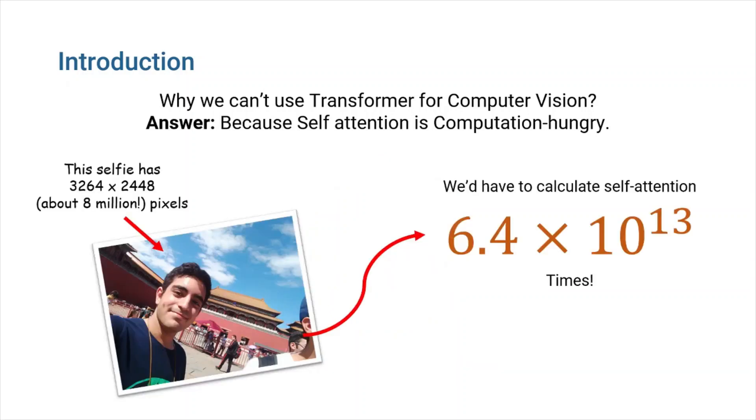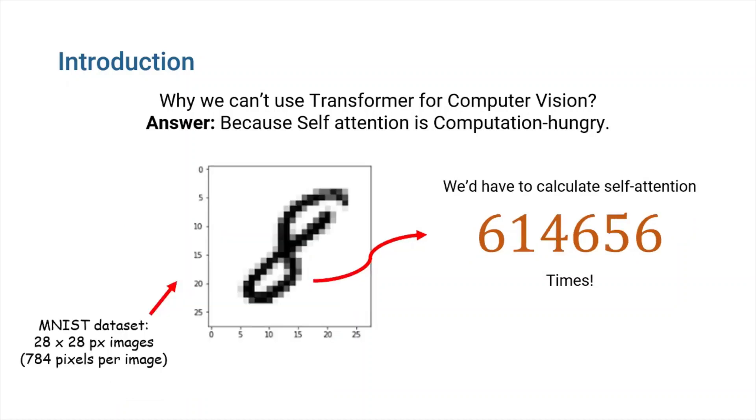Now, if we want to do the same thing in an image, we should calculate an attention weight for each possible pair of pixels. For an ordinary selfie like one you can see here, which has about 8 million pixels, we should calculate more than 60 trillion attention weights. Even for simpler images, like handwritten digits in MNIST dataset, which are 28x28 pixel images, we'll have to calculate more than 600,000 attention weights. We need to find out a way to reduce the amount of times we have to do the self-attention operation if we want to use transformer for images.